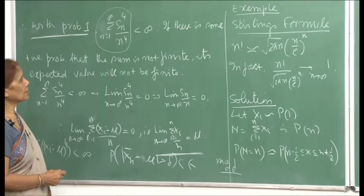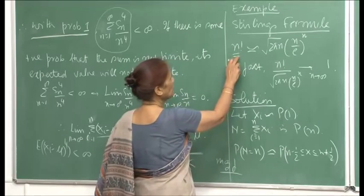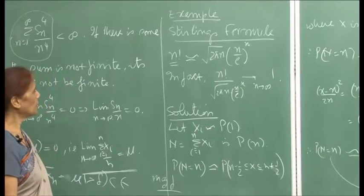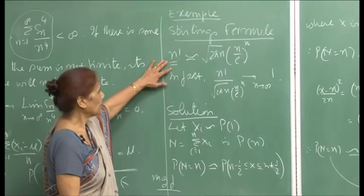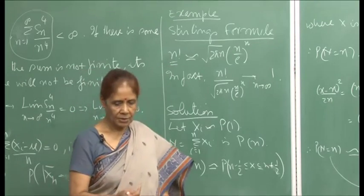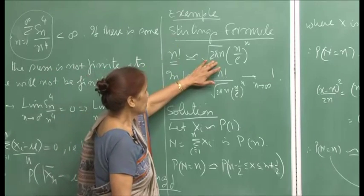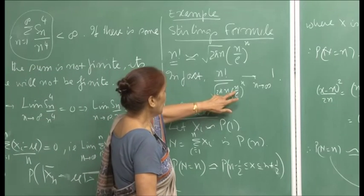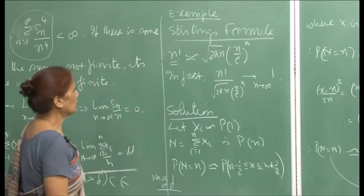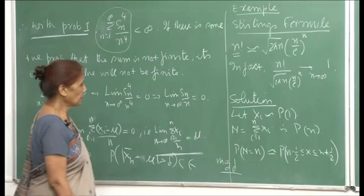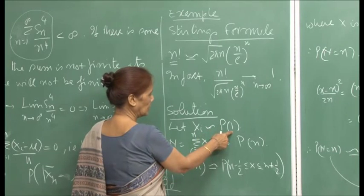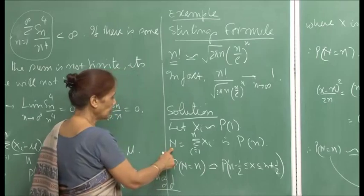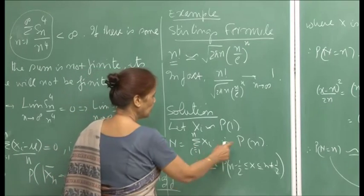Now let us look at Stirling's formula: n! ≈ √(2πn)·(n/e)^n. This is a useful approximation for factorials in limiting situations. Equivalently, n!/[√(2πn)·(n/e)^n] → 1 as n → ∞. To derive this, let x_i be Poisson(1) random variables, and let N = Σ x_i for i from 1 to n, so N is Poisson(n). For Poisson(n), both the mean and variance equal n.